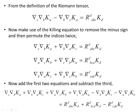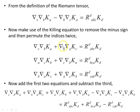We're now going to derive some interesting results involving Killing vectors and the Ricci tensor, Ricci scalar, and Riemann tensor. We'll begin with the definition of the Riemann tensor. One of the first things we'll do is use the Killing equation to remove the minus sign by swapping the two indices, since the Killing equation is anti-symmetric in its indices.